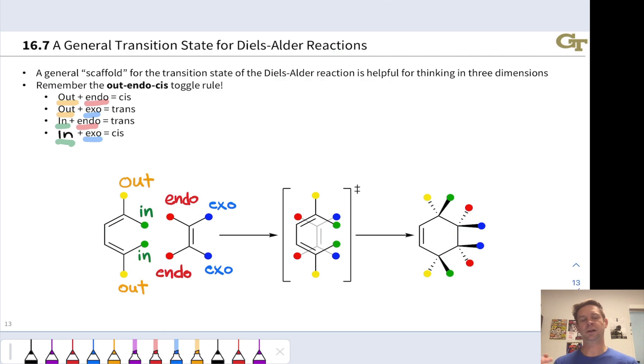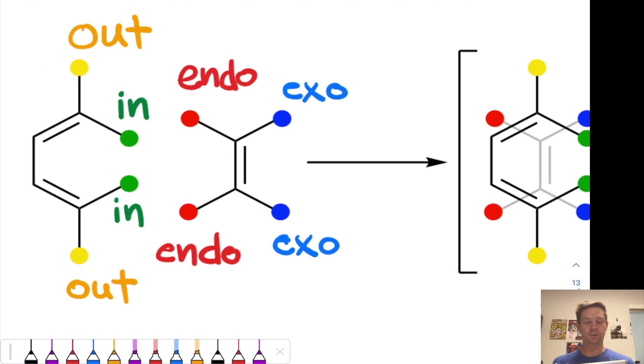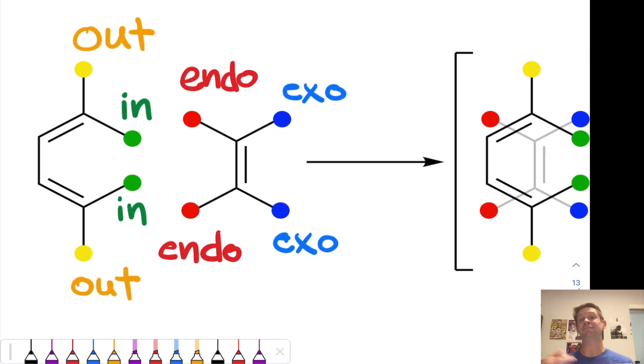We can put all this together to generate a general transition state for Diels-Alder reactions and put together what's a pretty cool sort of toggle rule for predicting stereochemistry in Diels-Alder reactions. I call it the out-indo-cis rule. Now, I did not invent this. I have to give credit where credit is due. Bob Grossman, as far as I'm concerned at the University of Kentucky, is the inventor of the out-indo-cis rule. And to understand the out-indo-cis rule, I actually don't want to talk about the rule just yet. I want to talk about what we mean by out and in and endo and exo.